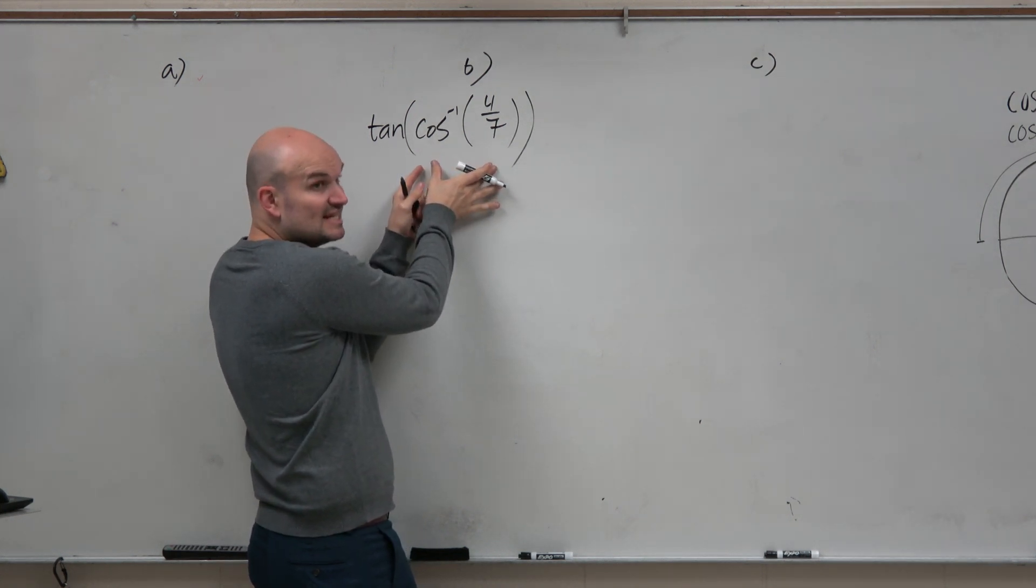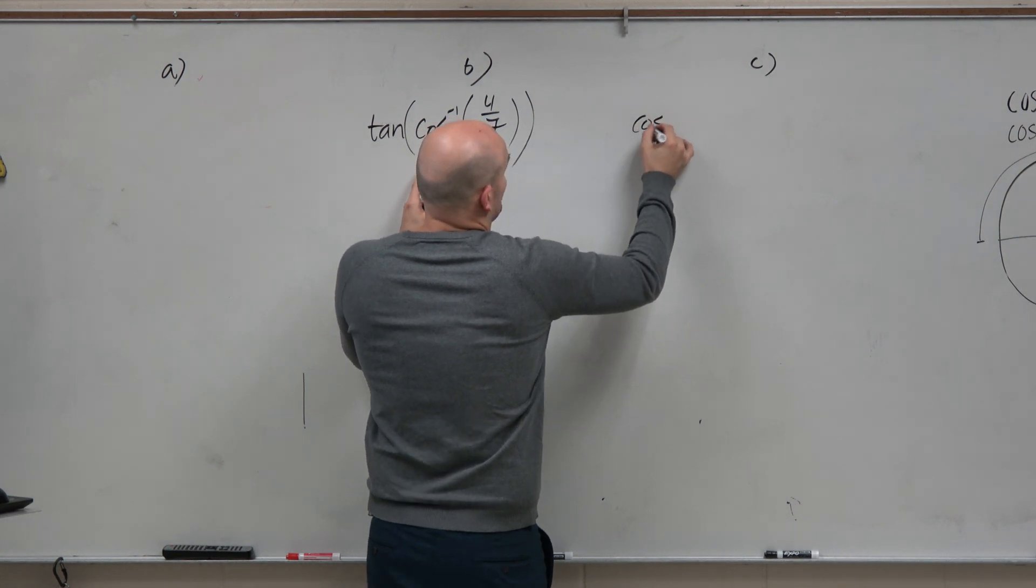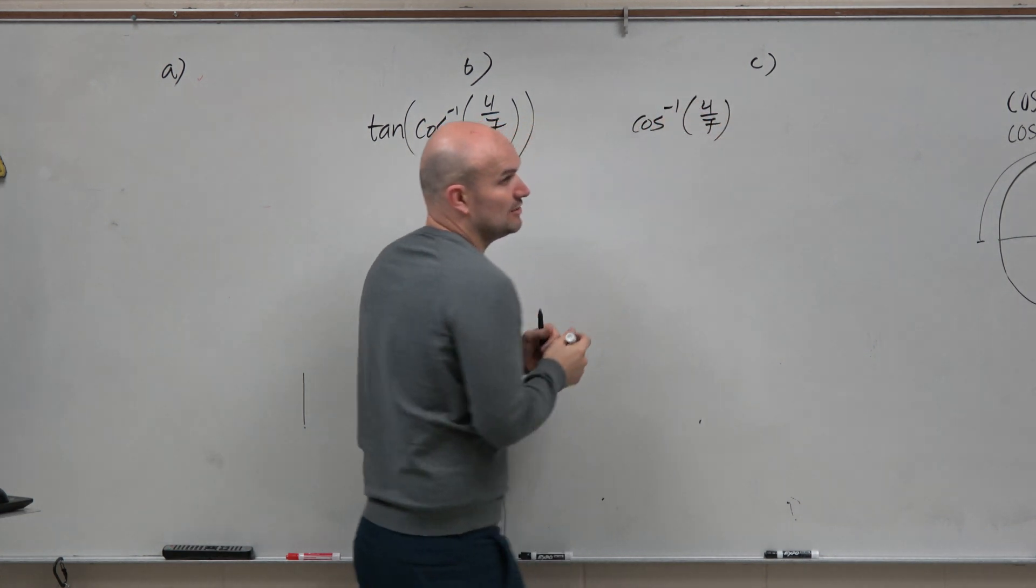Remember, cosine inverse is going to give us an angle, right? So we can also write this as cosine inverse of 4 over 7 is going to give us some angle.